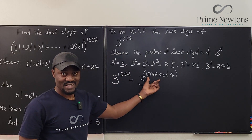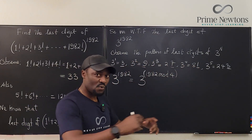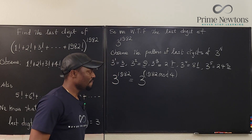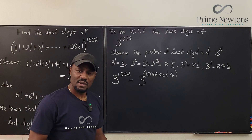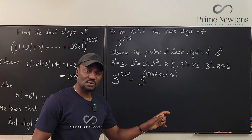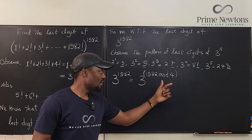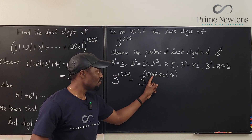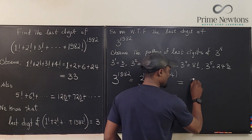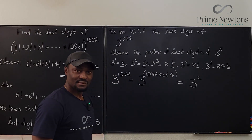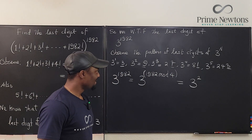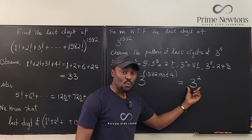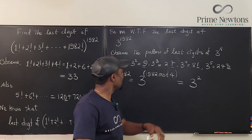We're deleting as many 4-cycles as possible. What is 1982 mod 4? Any number is divisible by 4 if its last two digits form a number divisible by 4. 82 is not divisible by 4 — 80 is, so there's a remainder of 2. Therefore 3^1982 has the same last digit as 3^2.